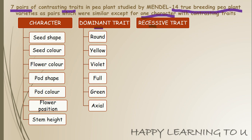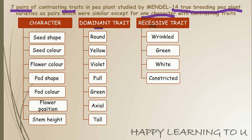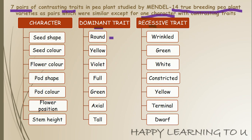These were the seven traits, and the opposite contrasting traits for each were: wrinkled seed shape, green seed color, white flower color, constricted pod shape, yellow pod color, terminal flower position, and dwarf stem height. These traits were just opposite of each other — contrasting traits.